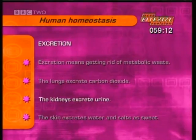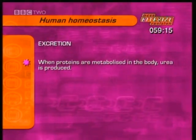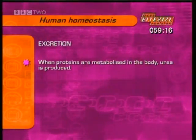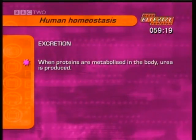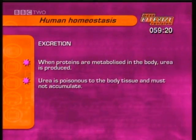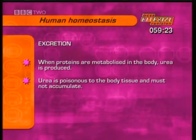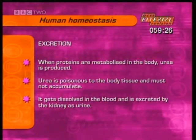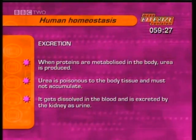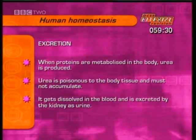How do the kidneys excrete urine? When proteins are metabolised in the body, urea is produced. Urea is poisonous to the body tissue and must not be allowed to accumulate. It gets dissolved in the blood and is excreted by the kidneys along with excess water and salts as urine.